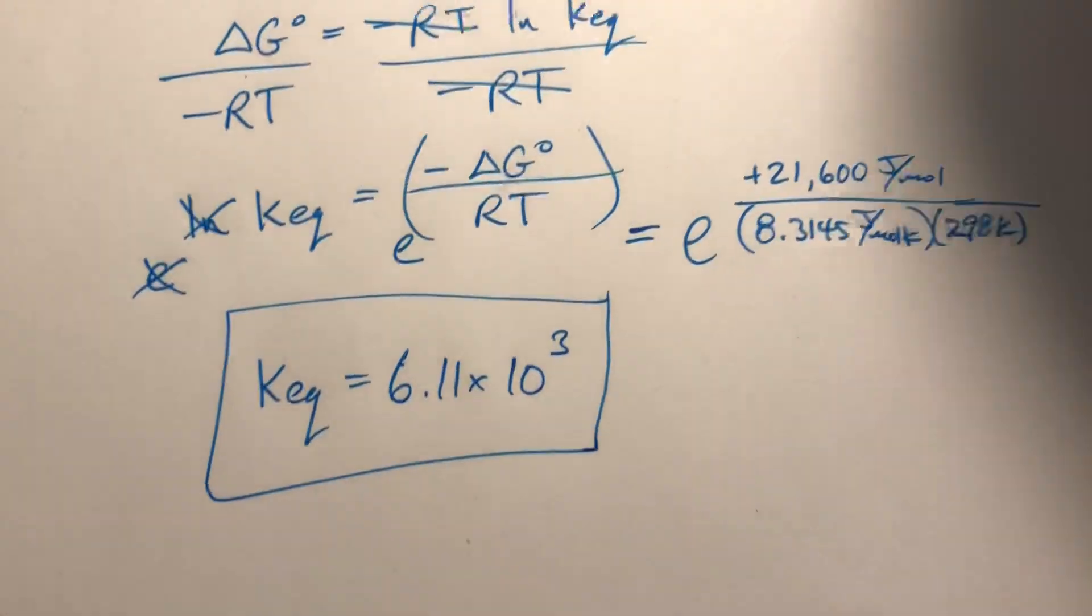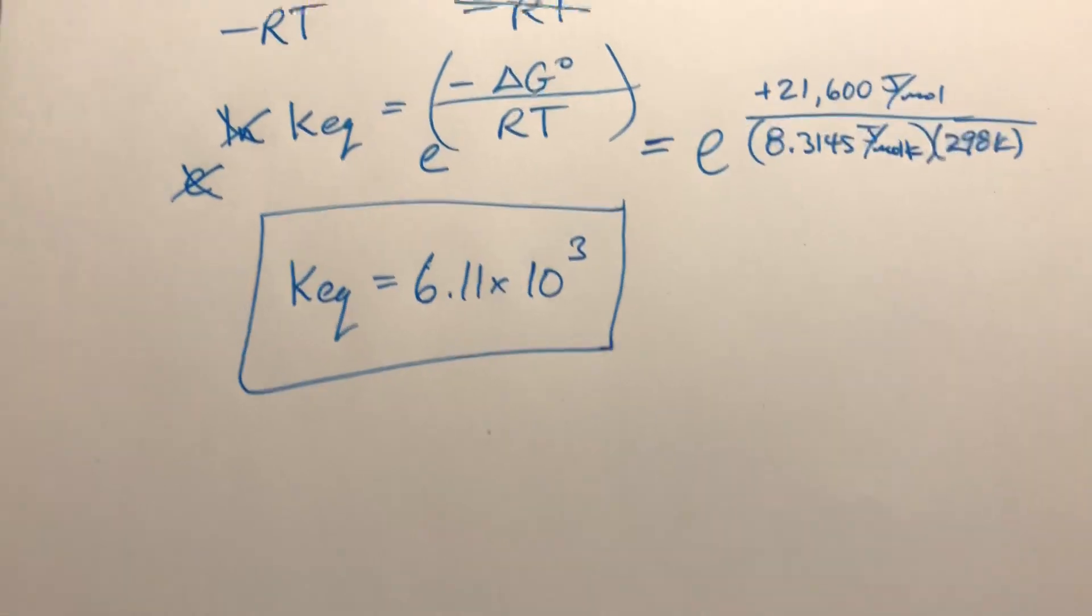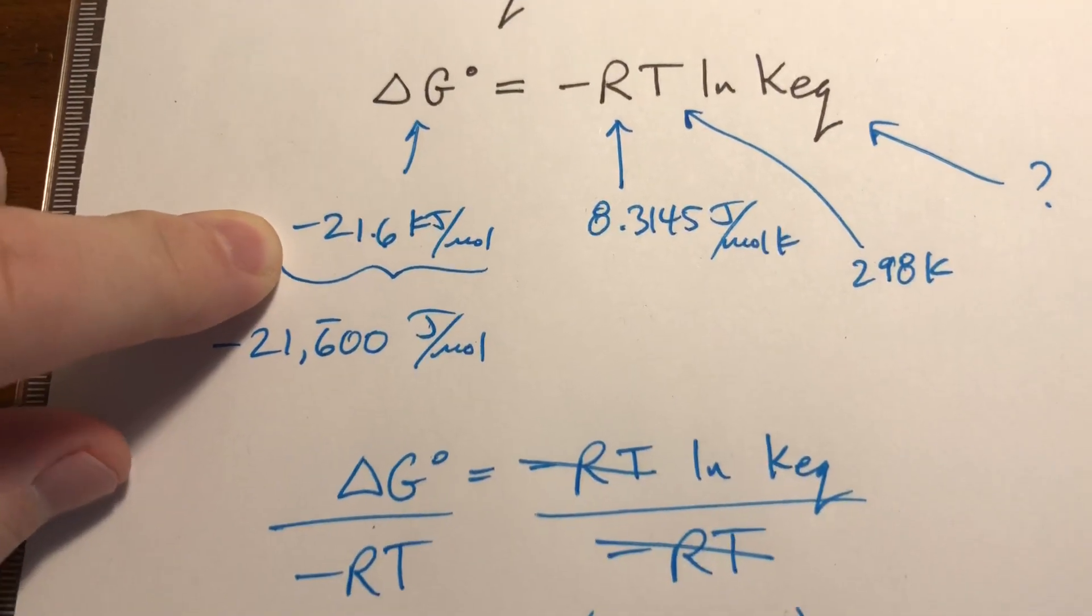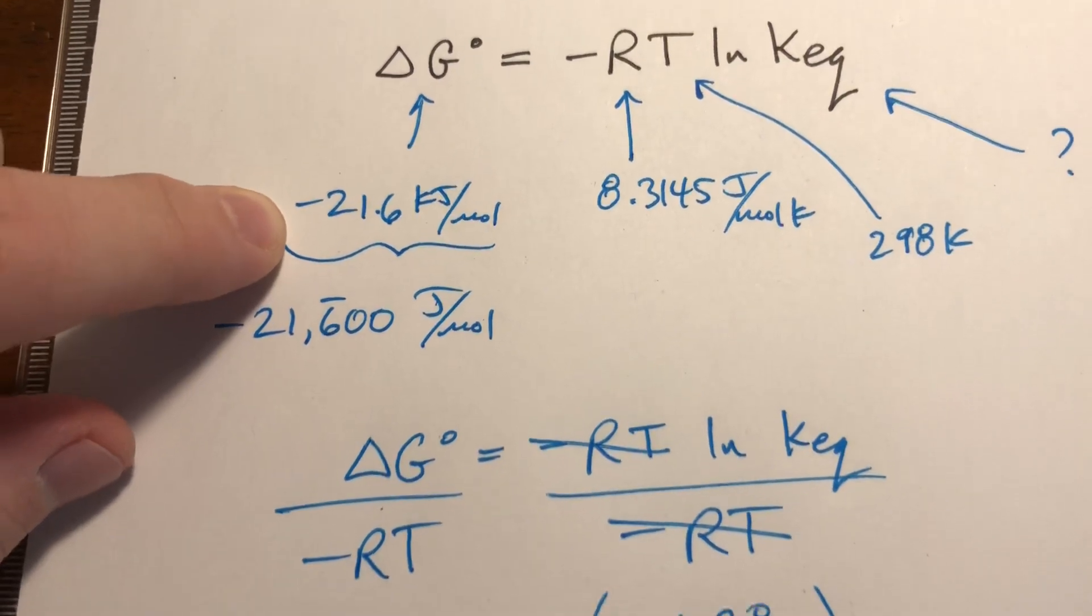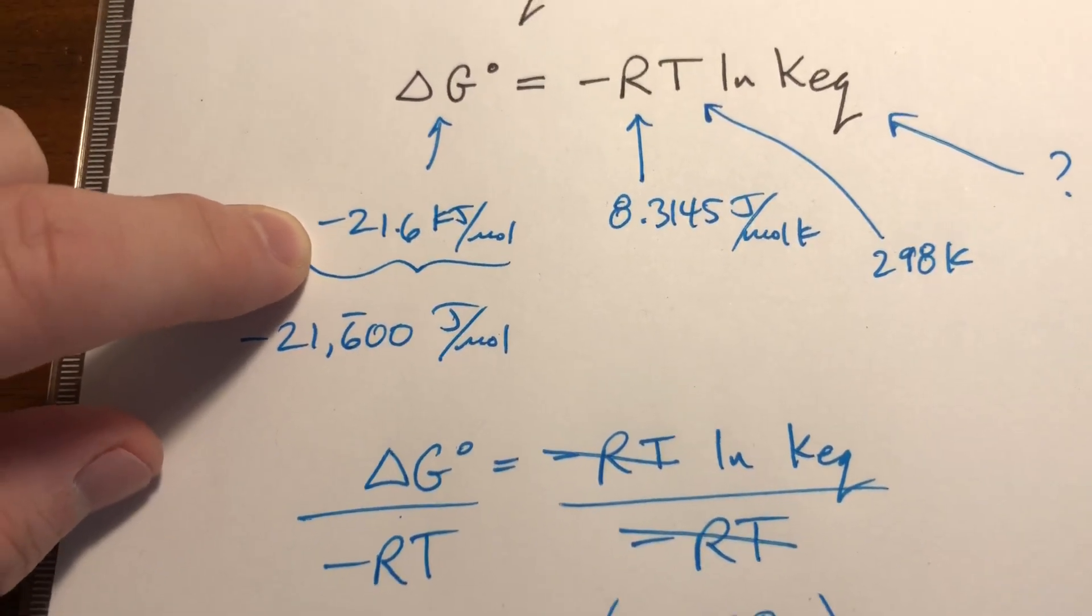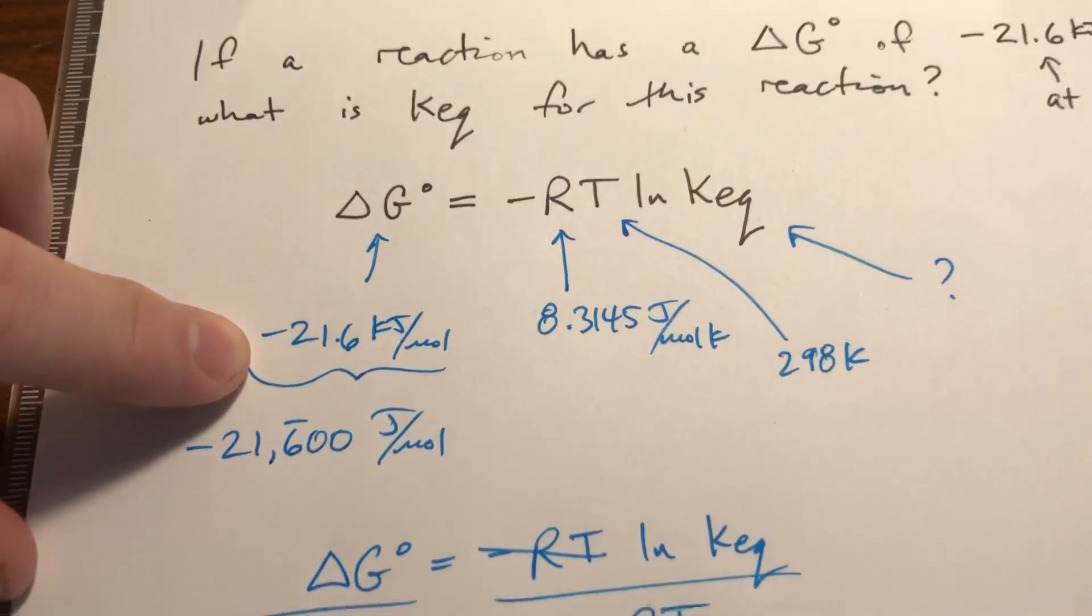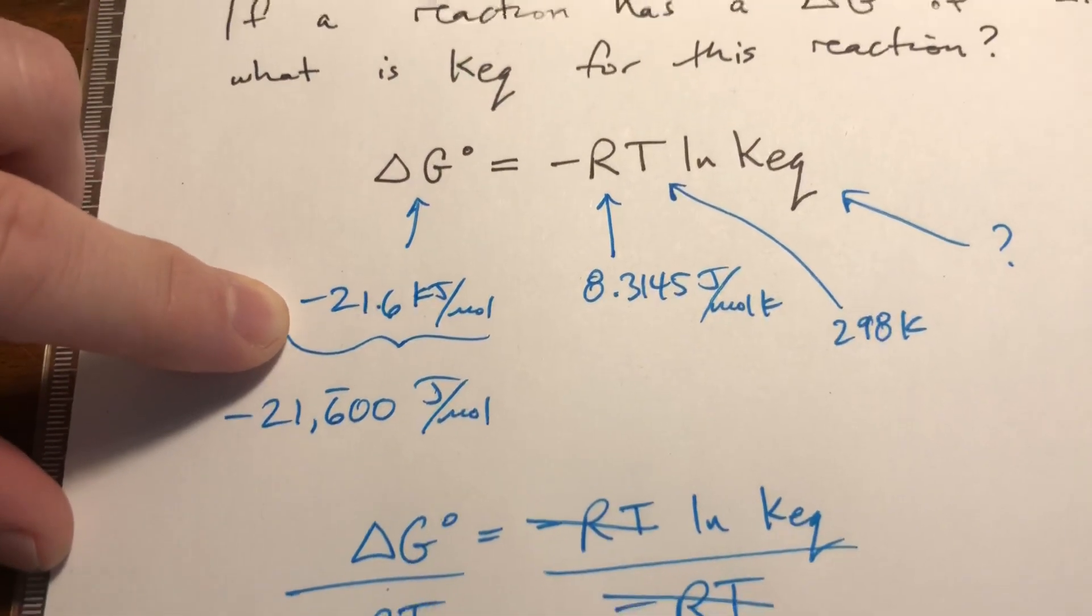Now checking to make sure this answer makes any sense here. If we have a delta G of negative 21.6 kilojoules per mole, this means the reaction is spontaneous in the forward direction. We don't even know what the reaction is, but we know that it is spontaneous because it has a negative delta G.